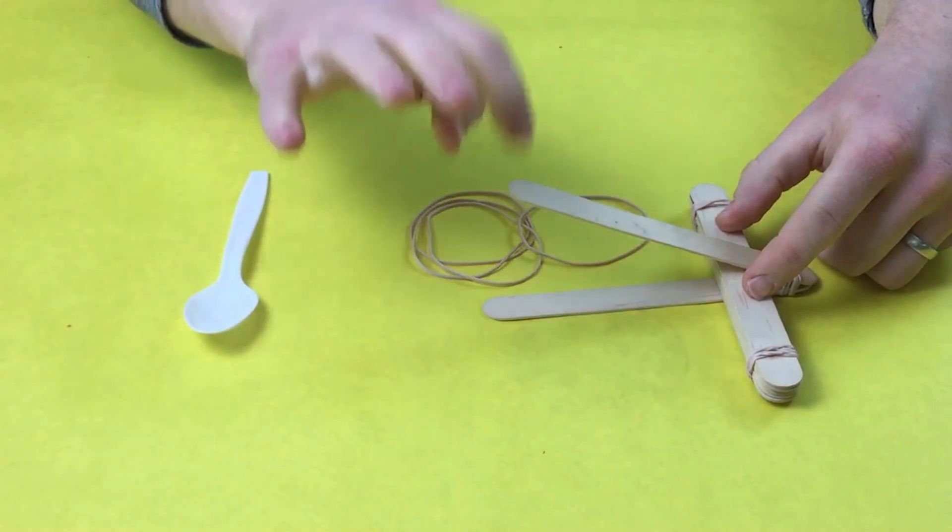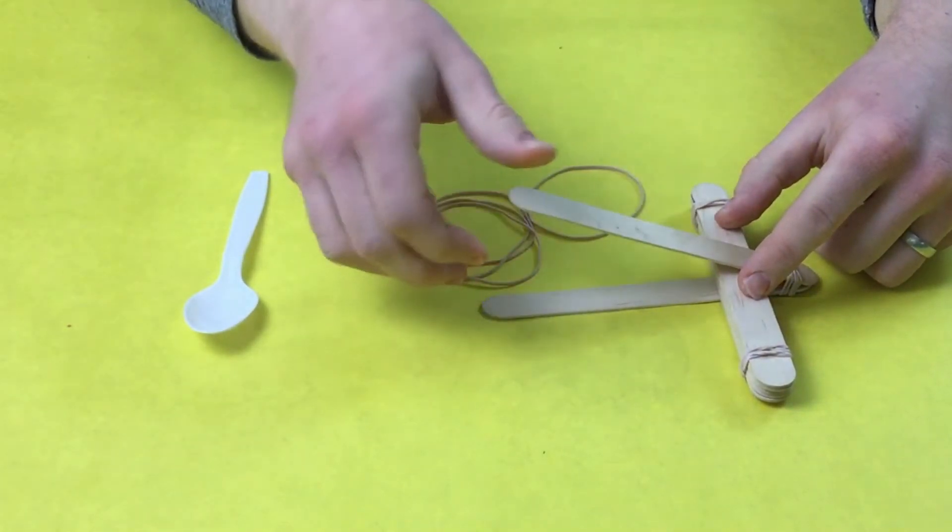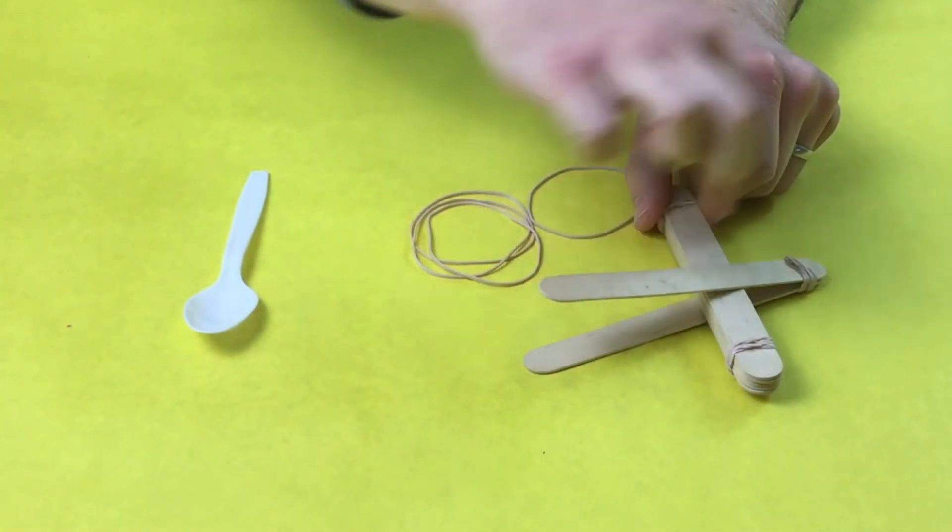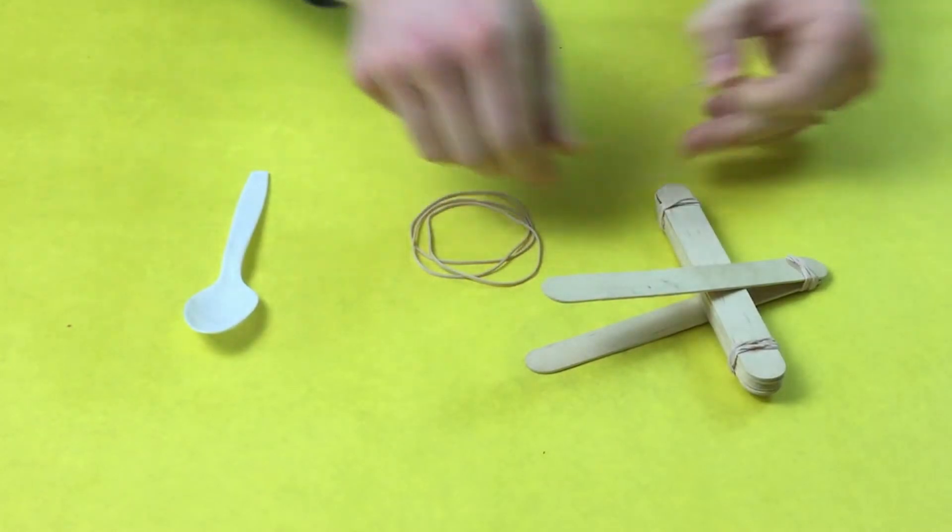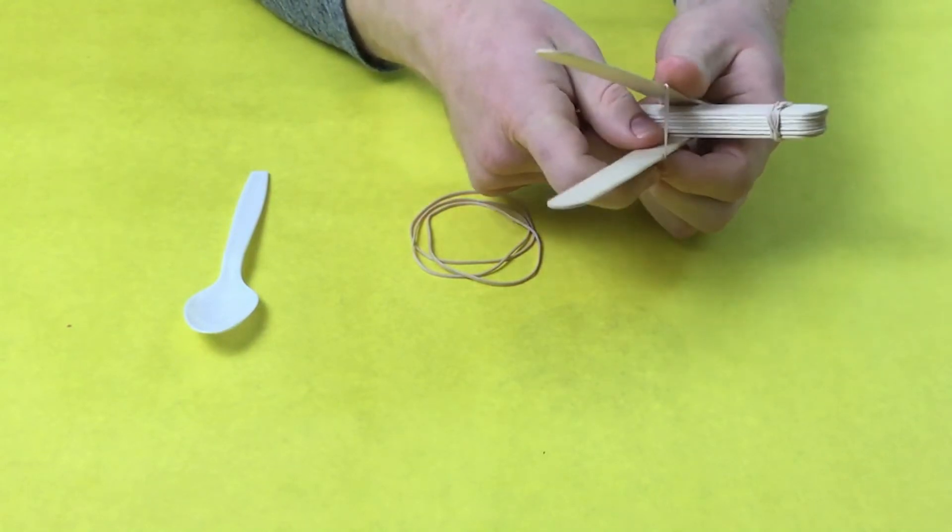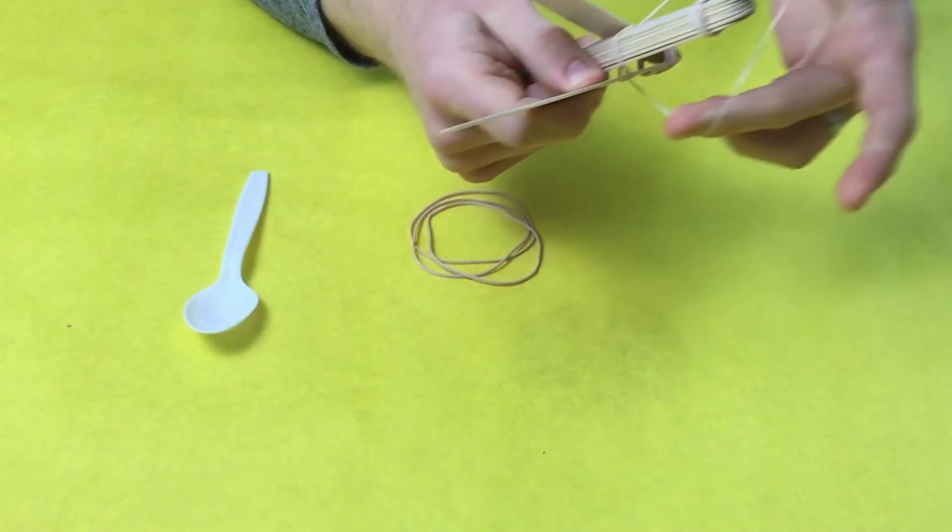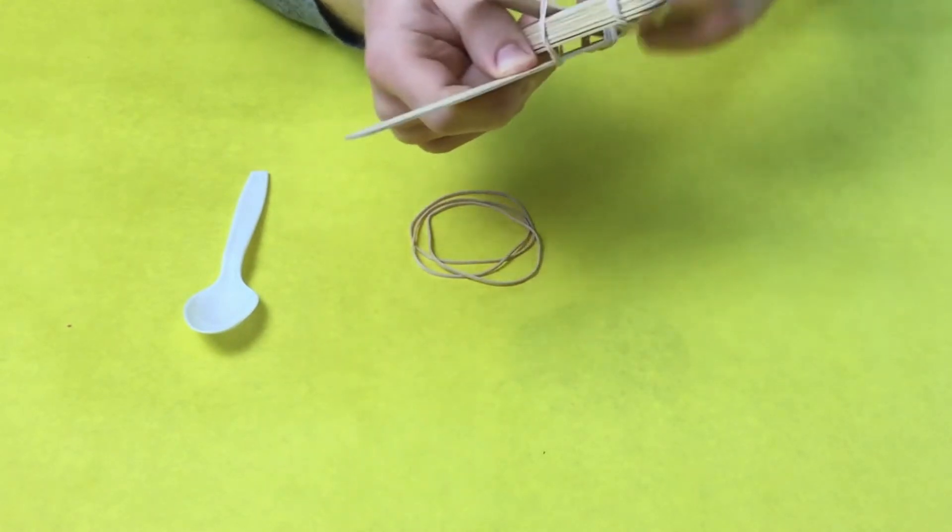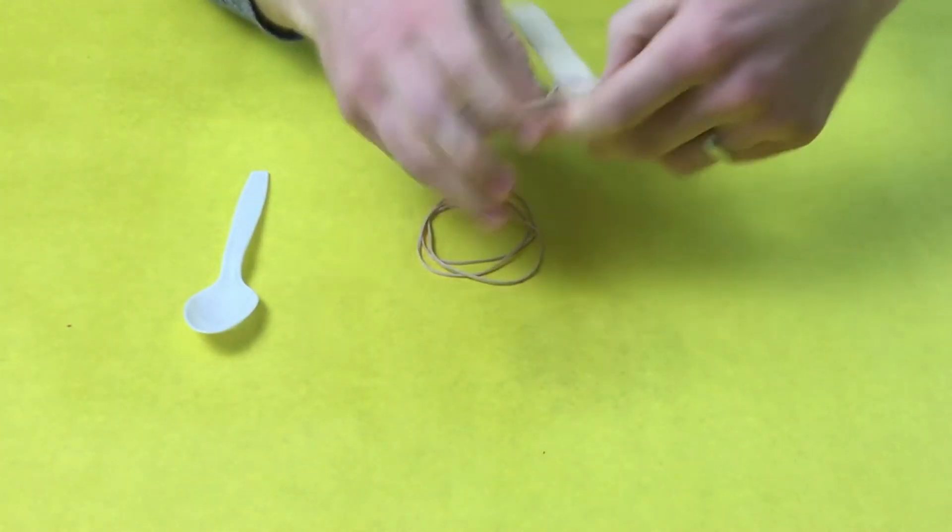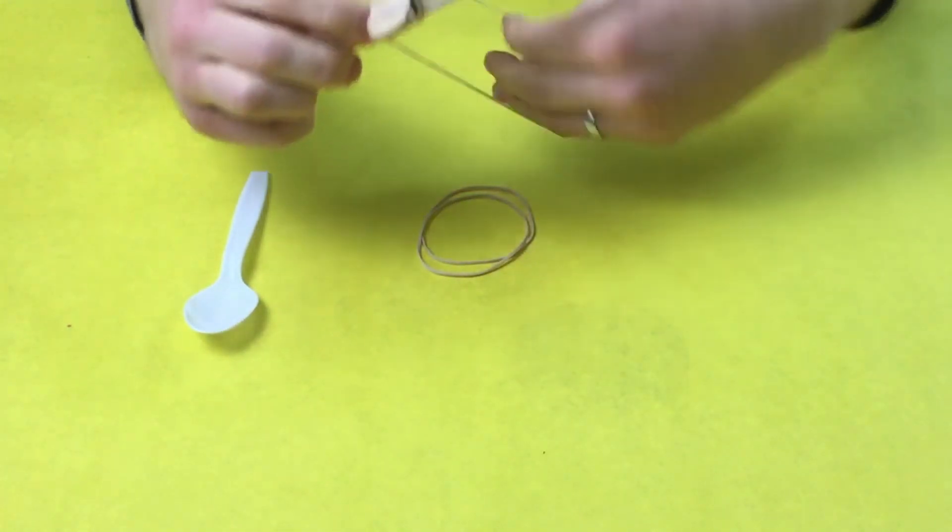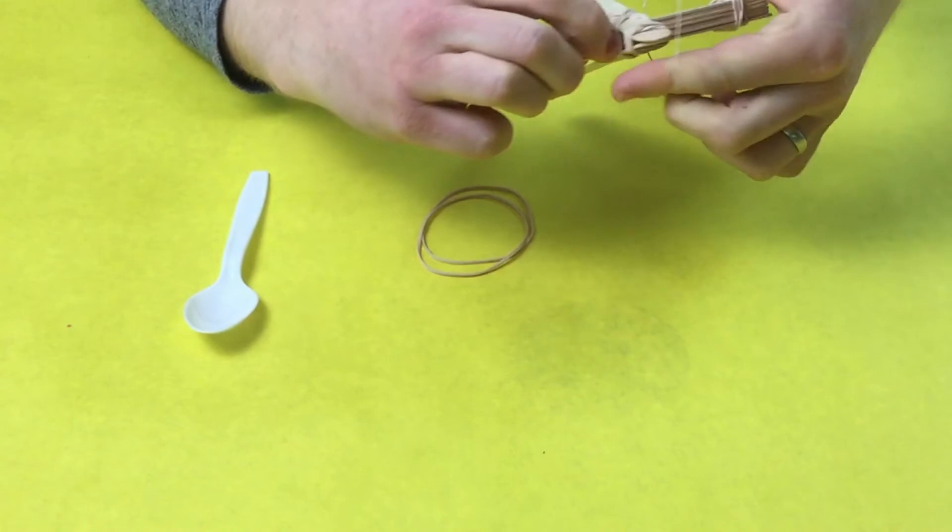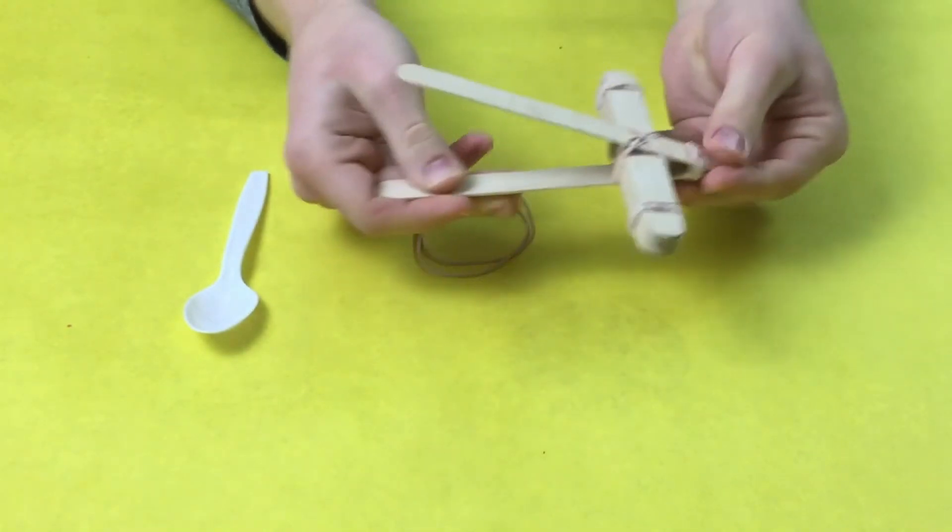Next step to secure this in place is to take two rubber bands and put them in an X shape across here. You'll do one across and then another one across like this. So there's one side and the other, like that.